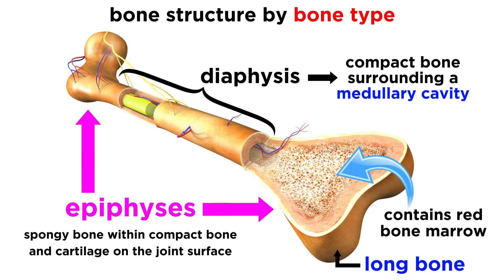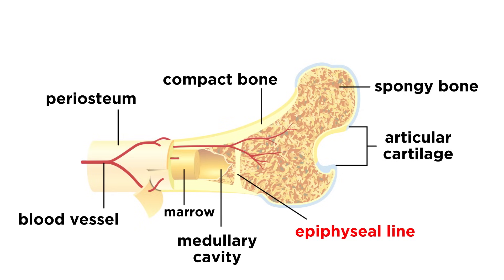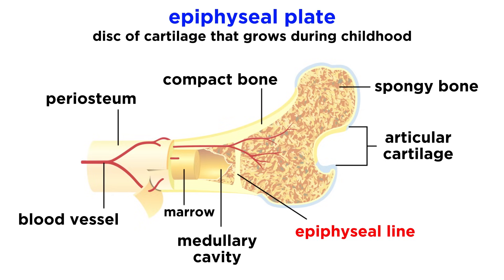Beyond the yellow marrow we mentioned, there is also red marrow, which can be found inside the cavities of spongy bone, and this type of marrow produces blood cells. We can also see an epiphyseal line, which is a remnant of the epiphyseal plate, a disc of cartilage that grows during childhood, which is how these bones get longer as a child gets taller.